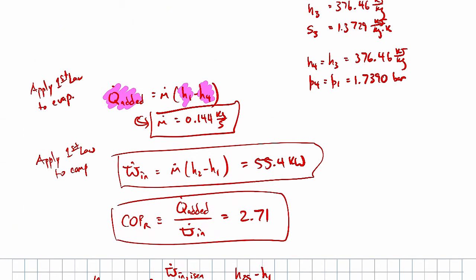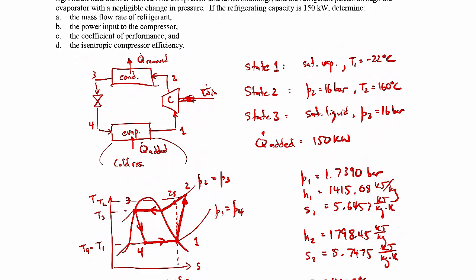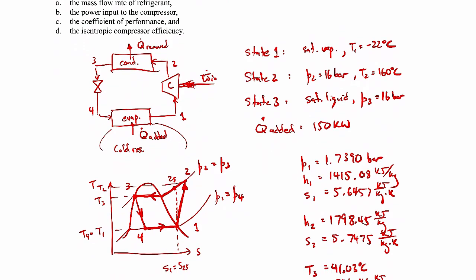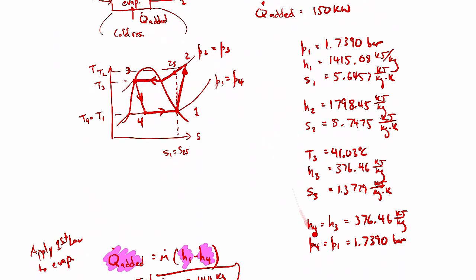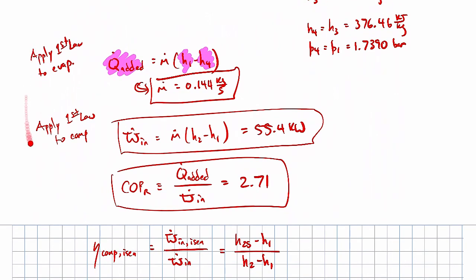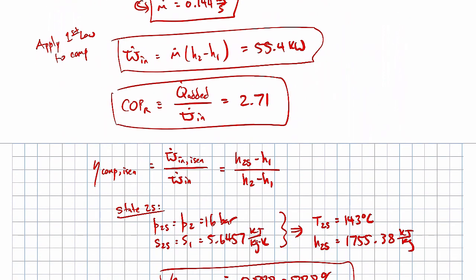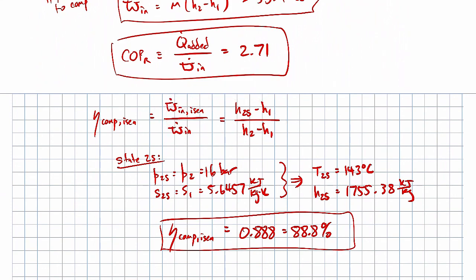That concludes this example — we've answered everything asked. Most of this is review: it comes down to drawing a sketch of the process and on a TS diagram to help visualize things. A lot of effort goes into finding properties at the various states using property tables, and here we just use property tables rather than simplified models. Then it's a matter of applying the first law, knowing how to define the coefficient of performance for a refrigeration cycle, and knowing how to define the isentropic compressor efficiency.